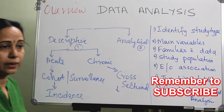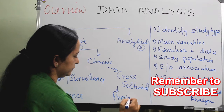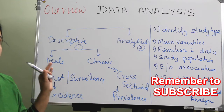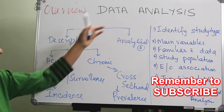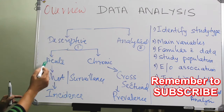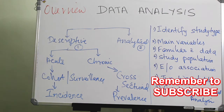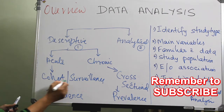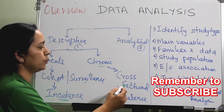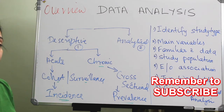In a cohort or surveillance study for an acute condition, you are finding out the incidence. In a cross-sectional survey for a chronic condition, you will find out the prevalence. So in a descriptive study, depending on the outcome, look whether it is acute or chronic: if acute, it is always a cohort or surveillance and you find the incidence; if chronic, you go for a cross-sectional survey to find the prevalence.